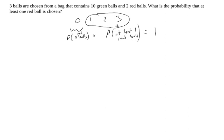Which means if I'm trying to figure out this probability here, the probability of getting at least one red ball, I could do one minus the probability of getting exactly zero red balls.